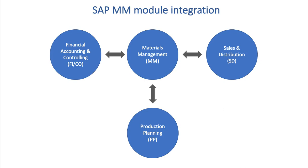A common example of this integration is when a sales order is created. All the data needed in the sales order regarding the product or service flows in from materials management. This includes data about shipping points and plant information for when the order is ready to be fulfilled.